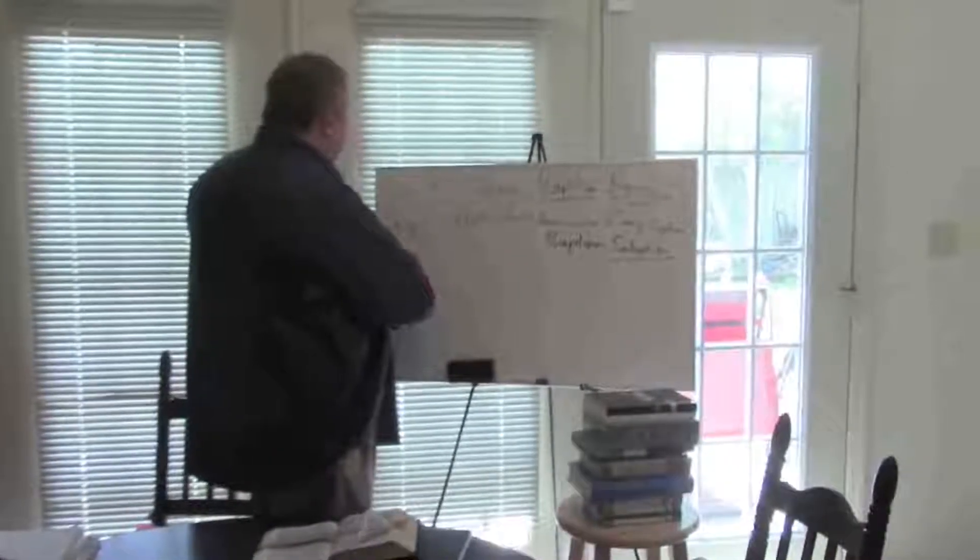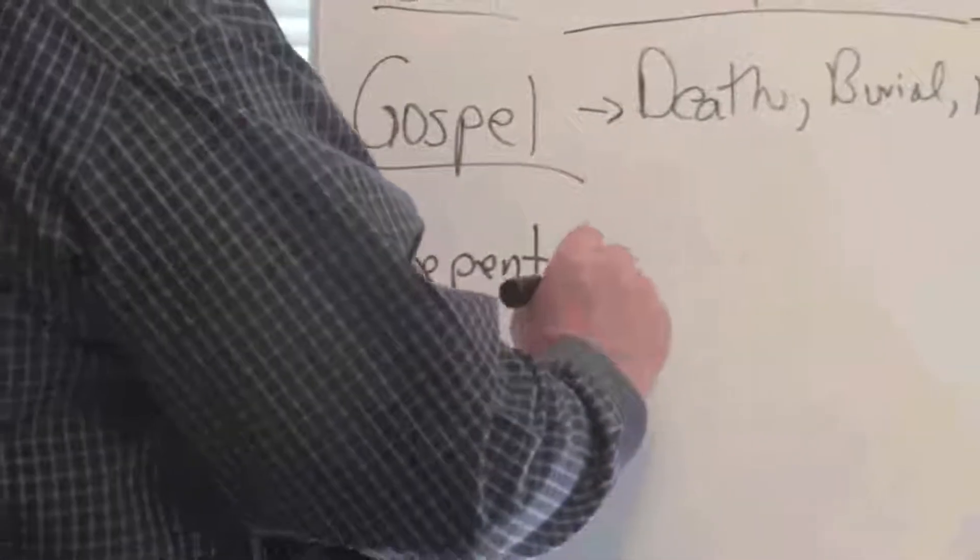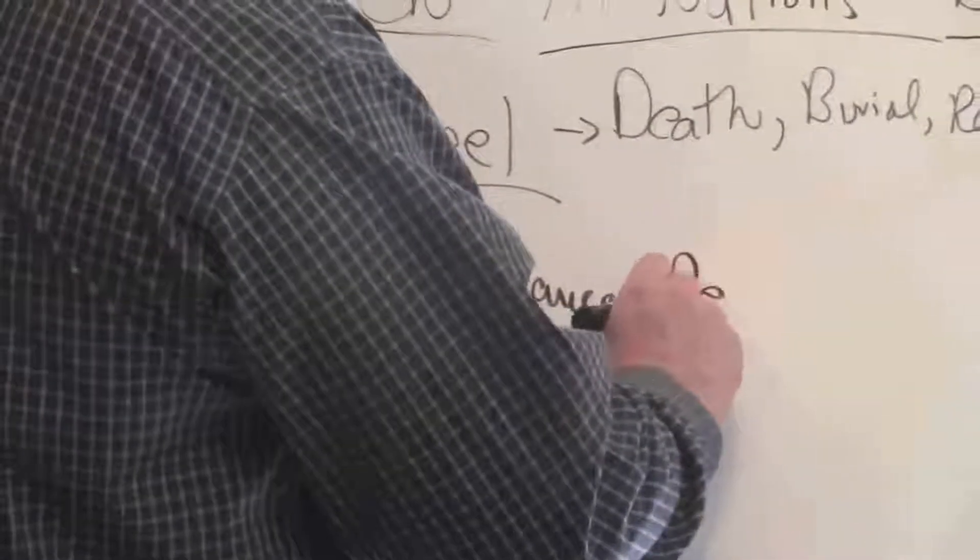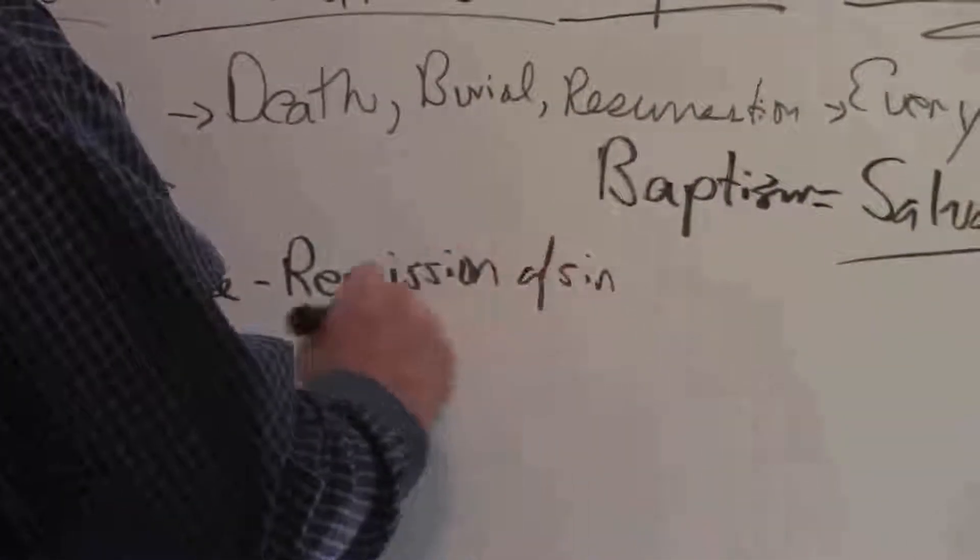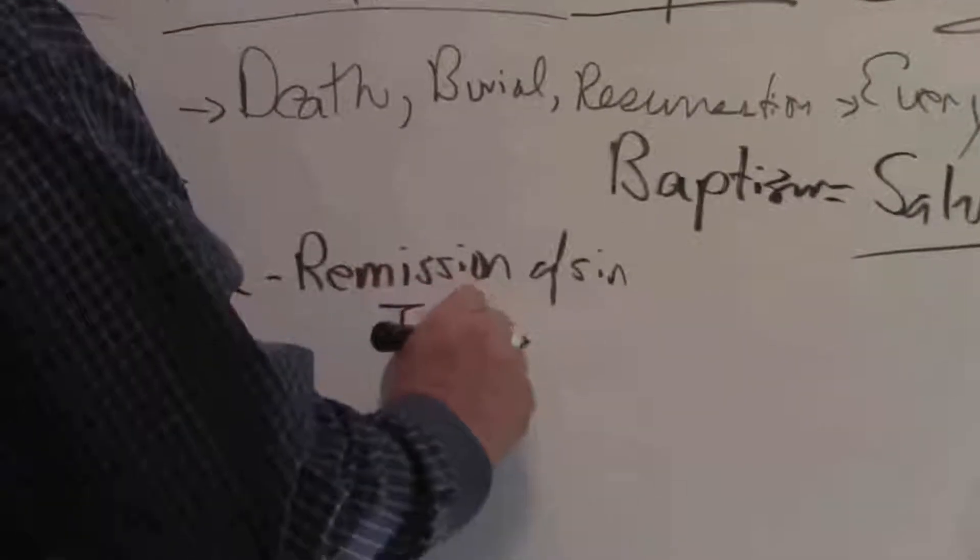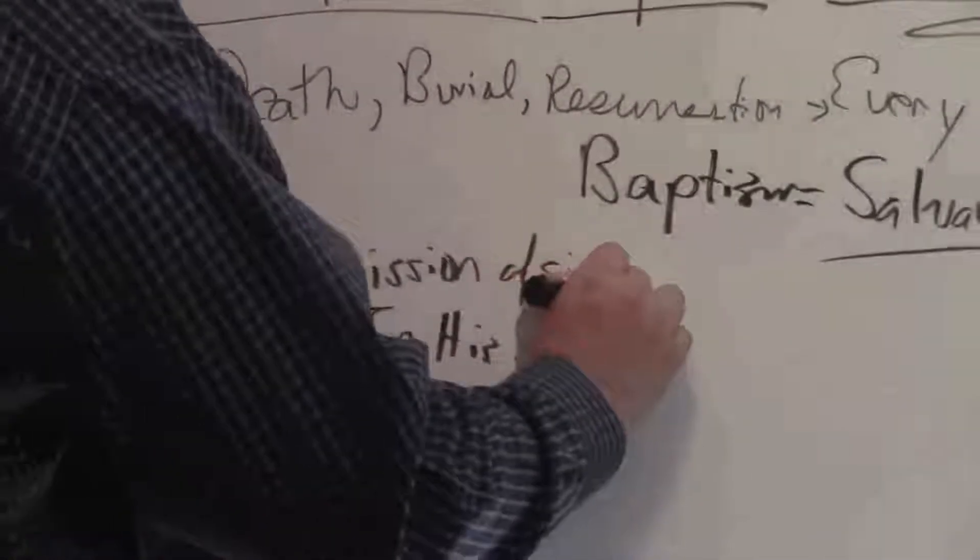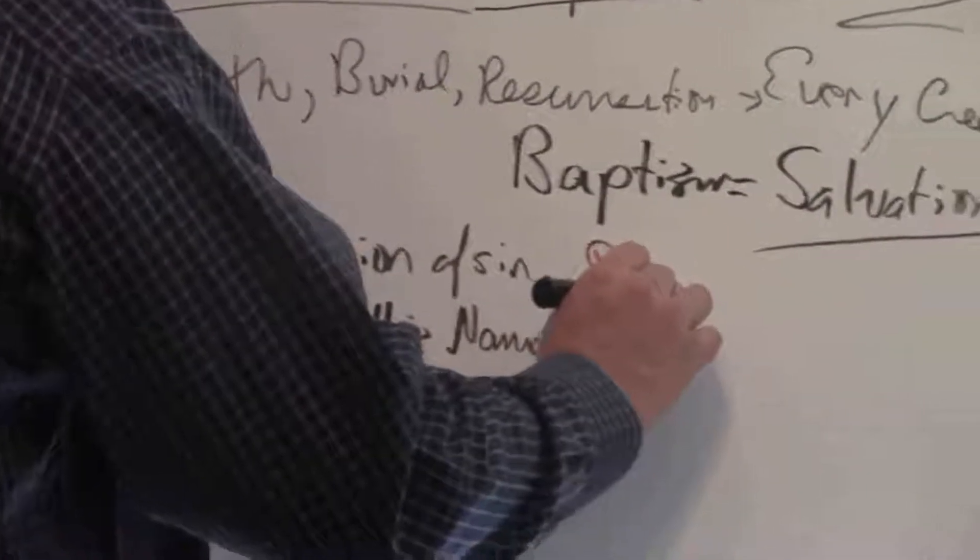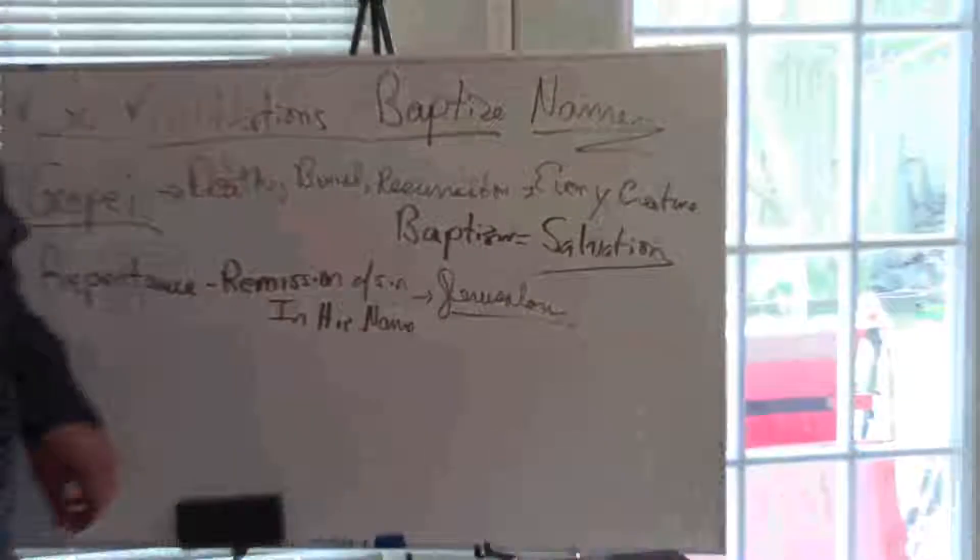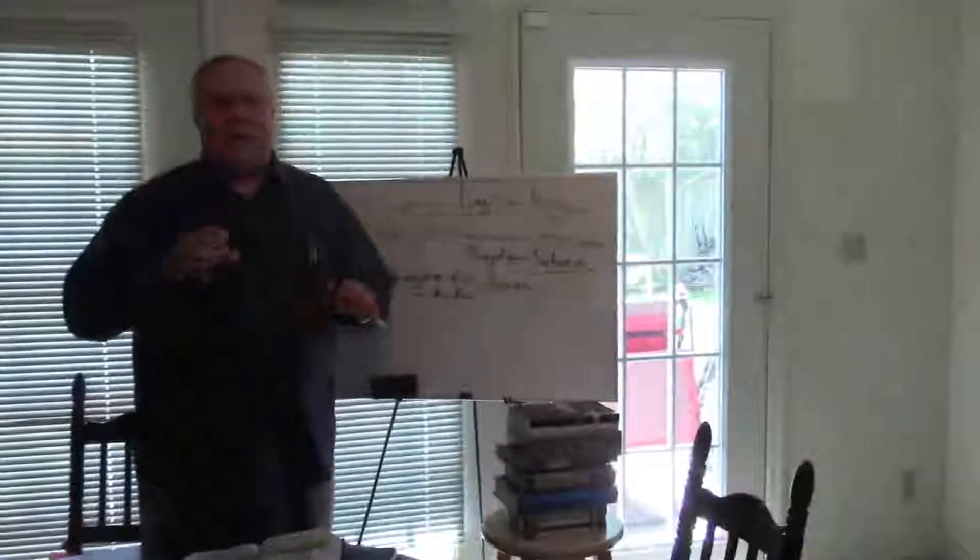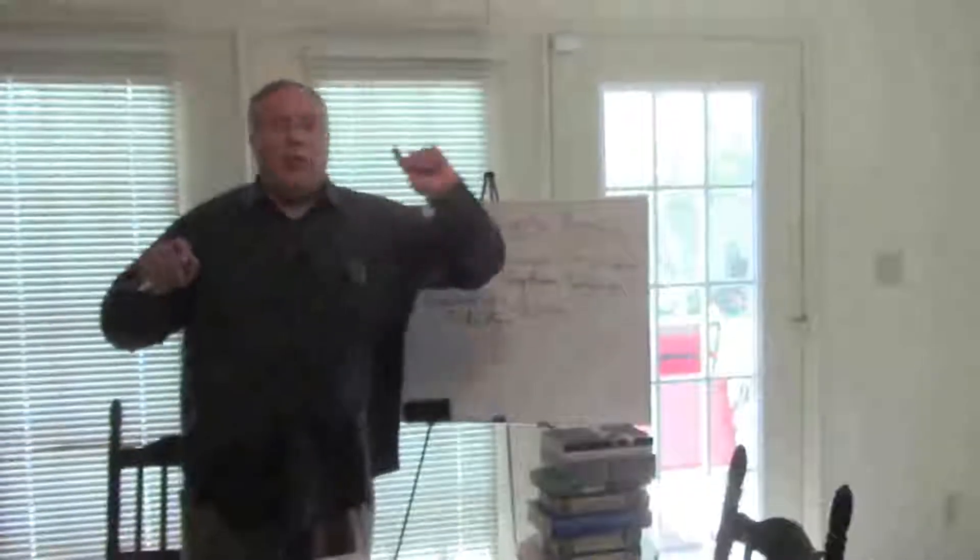And He said unto them, Thus it is written, thus it behoove Christ to suffer and arise from the dead the third day. And that repentance and remission of sin should be preached in His name among all nations beginning at Jerusalem. Now we have repentance as part of the Great Commission, also remission of sins. And this remission of sins is going to be accomplished in His name. And it's going to start in Jerusalem.